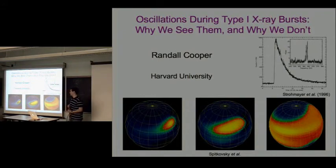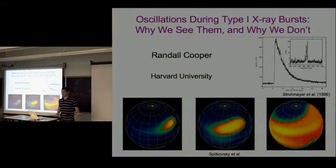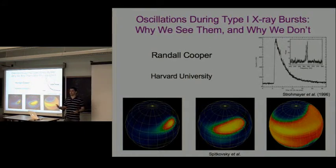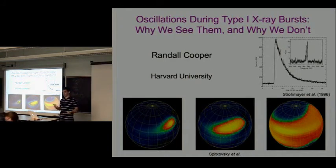Thank you for inviting me. I'm going to be talking about Type 1 X-ray bursts. A Type 1 X-ray burst is a thermonuclear explosion that occurs on the surface of an accreting neutron star.